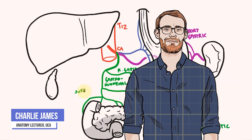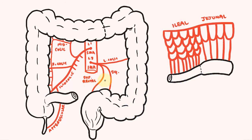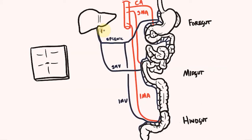In the previous two videos we looked at how we deliver oxygenated blood to the gut tube. In this video I'll be drawing out the venous drainage of the gut tube and the formation of the portal venous system.